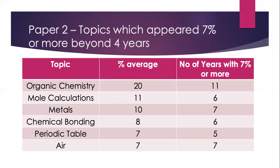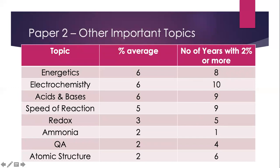Be familiar with all the different types of questions that can appear in these first six topics and in energetics. There is a very high probability that this year's questions will come from there. The data-based question changes each year — based on the trend, if acid-base was the data-based question last year, it most likely will not be again. It could be organic chemistry, energetics, electrochem, speed of reaction, air, periodic table, or metals. Energetics concepts like energy profile diagrams, energy level diagrams, calculation of enthalpy change, bond breaking and bond forming, and examples of exothermic and endothermic reactions cannot be ignored.